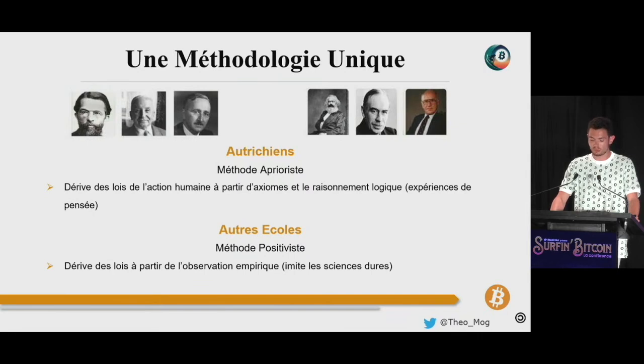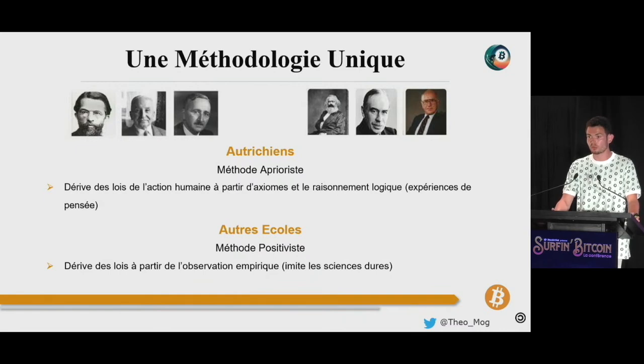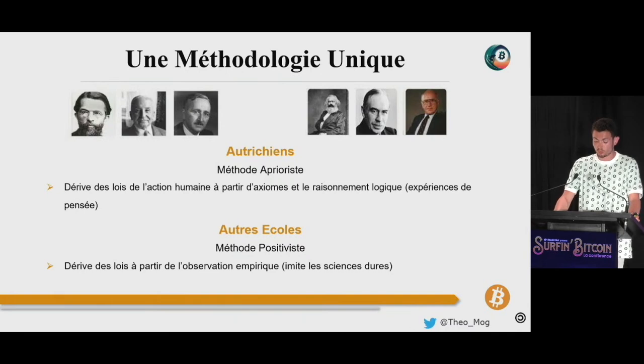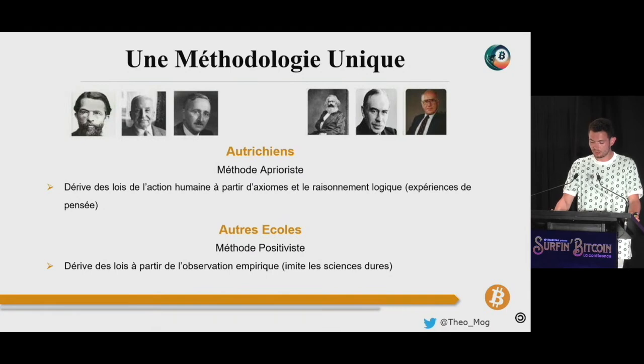Cette méthodologie que l'on retrouve usuellement dans les sciences physiques — la physique, la biologie, la chimie — est ce qu'on appelle positiviste et consiste à dériver des lois de données empiriques. Elle est adaptée aux phénomènes physiques parce qu'on peut reproduire des expériences dans un environnement contrôlé et isolé. On ne peut pas traiter les données historiques et statistiques en économie de la même manière. La stagflation des années 70 ou la répression financière des années 40 ne sont pas des expériences reproductibles. On ne peut pas isoler certains facteurs et neutraliser certaines variables, répéter l'expérience pour tenter d'affirmer une hypothèse scientifique comme le ferait un chimiste dans son laboratoire. Ça ne marche juste pas.